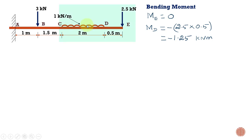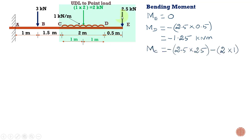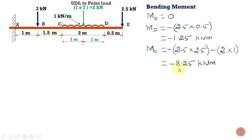To calculate the bending moment at C, we convert the UDL into an equivalent point load acting at the midsection. The moment at C has two components: minus 2.5 kilonewtons multiplied by 2.5 meters (distance from C to E), and minus 2 kilonewtons (UDL equivalent) multiplied by 1 meter (distance to midpoint of UDL section). The net bending moment at C is minus 8.25 kilonewton-meters.